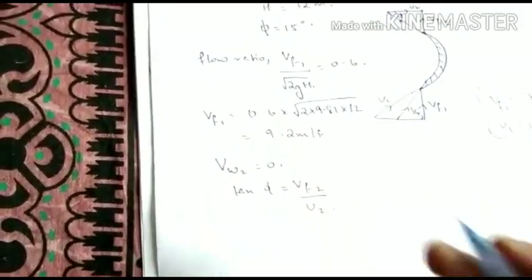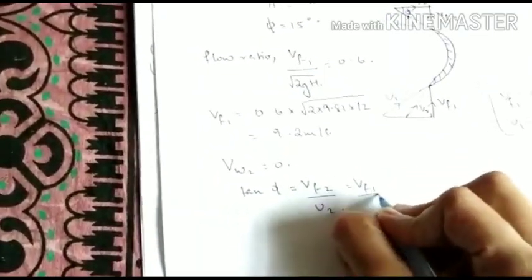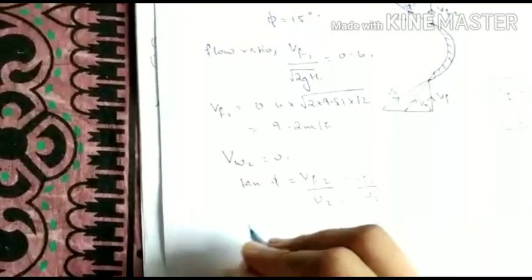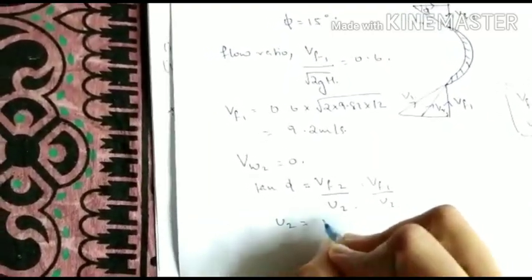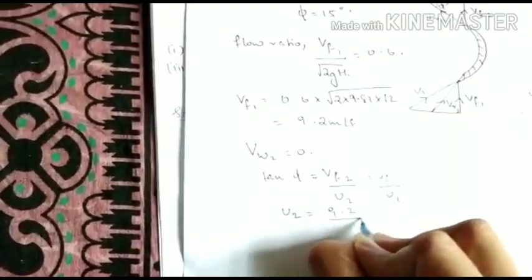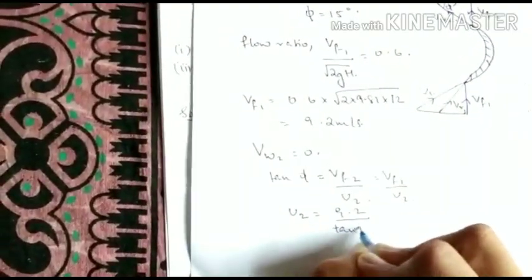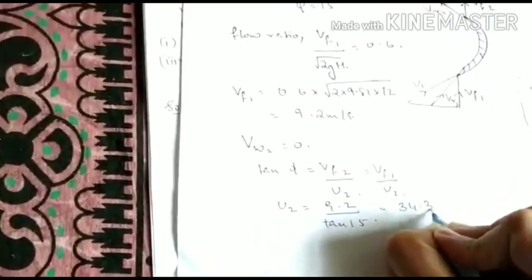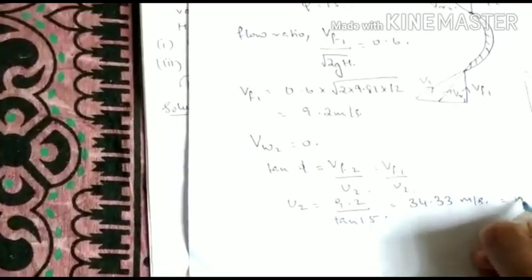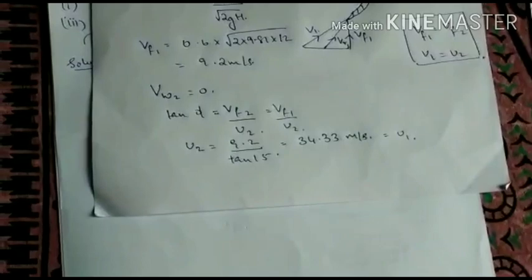VF2 is given because it is same as VF1. So from that you can find U2: 9.2 divided by tan 15. And you will get it as 34.33 meters per second. U2 is equal to U1 for Kaplan turbines.